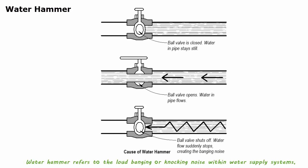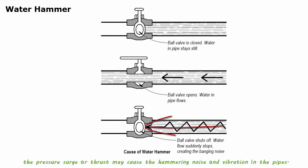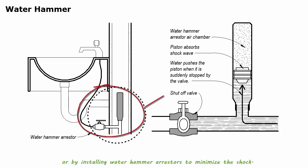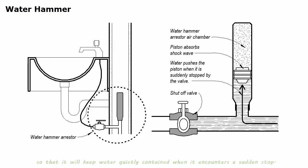Water hammer refers to the loud banging or knocking noise within water supply systems, as if the pipes are being hit by a hammer. It is a result of sudden changes of water flow through pipes. When water movement is stopped with a sudden force or direction change, the pressure surge or thrust may cause a hammering noise and vibration. Water hammer can be reduced by decreasing water supply pressure with a pressure regulator, or by installing water hammer arrestors. An arrestor has a chamber full of air that compresses when water enters it, cushioning the water so it stays quietly contained when it encounters a sudden stop.